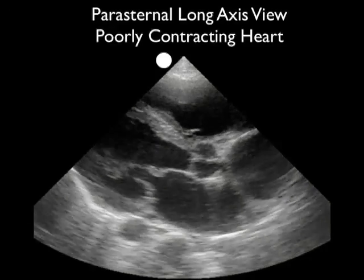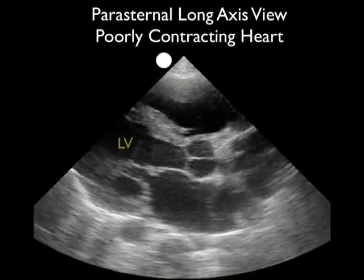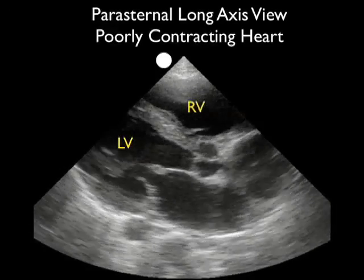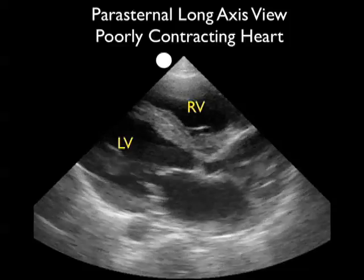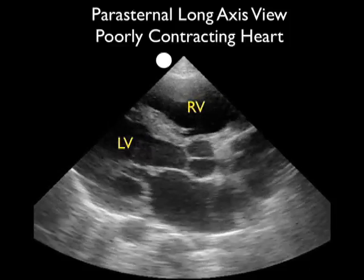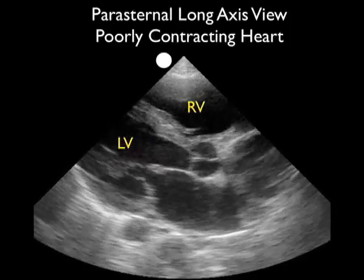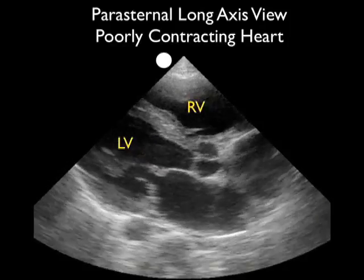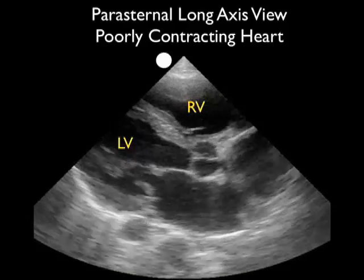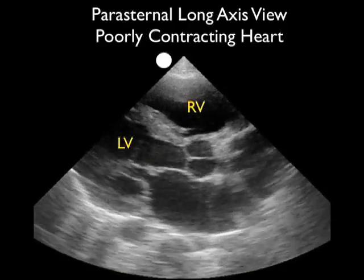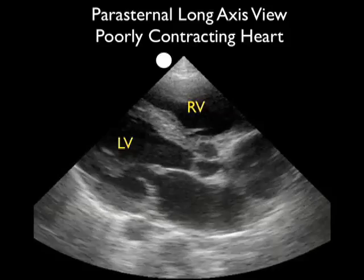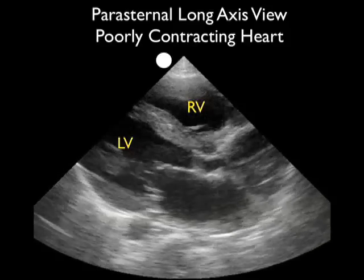Now let's contrast that last video clip with this one taken from a patient with an advanced cardiomyopathy. We can see the left ventricle and the right ventricle in a superficial location above the LV. Notice the very poor percentage change of the endocardial walls during systole, indicating a very decreased ejection fraction.